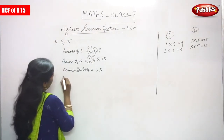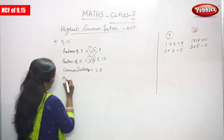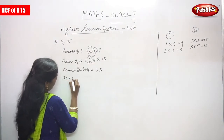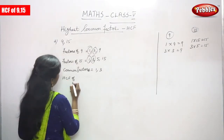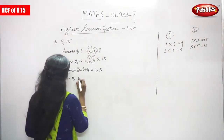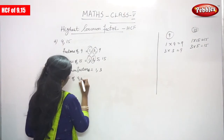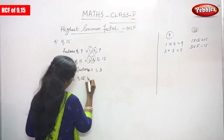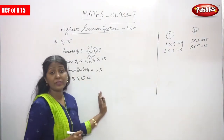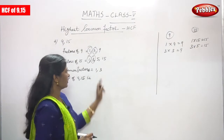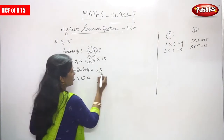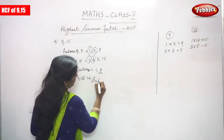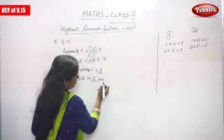What is the HCF? The highest common factor. HCF of 9 and 15 is — what is the highest common factor? That is 3. So 3 is the answer.